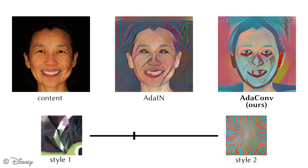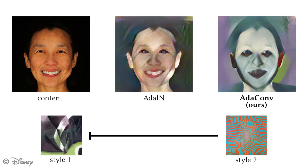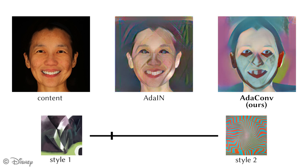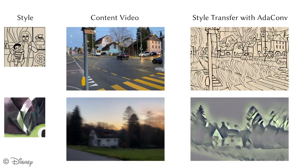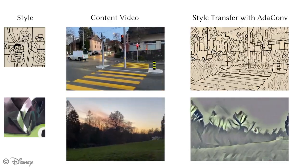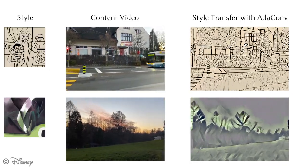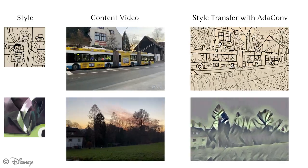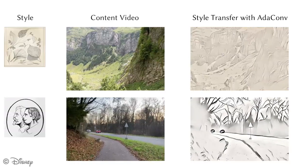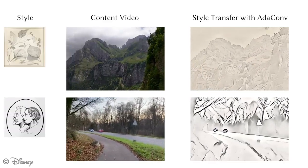We show the same effect on another pair of style images. AdaConv can also be easily incorporated into style transfer for video. Here we show the output of our model, trained without any temporal regularizer, on some test videos. Note that standard optical flow-based losses that improve temporal stability could be readily incorporated into our method.